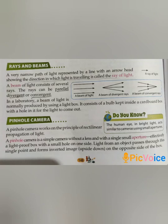Rays and beams. A very narrow path of light, represented by a line with an arrowhead showing the direction in which light is traveling, is called the ray of light. A beam of light consists of several rays. The rays can be parallel, divergent, or convergent. In a laboratory, a beam of light is normally produced by using a light box — a bulb kept inside a cardboard box with a hole in it for the light to come out.